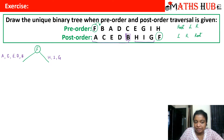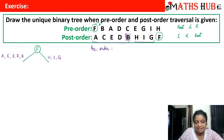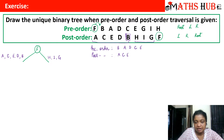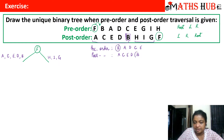These are now sub-problems. For the left subtree vertices A, C, E, D, and B, let us rewrite the pre-order and post-order. The pre-order for these vertices is B, A, D, C, E. The post-order is A, C, E, D, B. Applying the same technique — first vertex in pre-order and last vertex in post-order is the root — vertex B is the root of the left subtree.